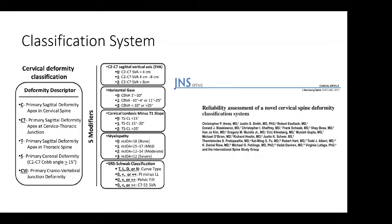In terms of classifications for cervical deformity, there's been increased interest in developing a reproducible classification system. This is an ISSG classification scheme developed in 2015 through a Delphi protocol. There are basic classifications for the descriptor of the deformity, and then five different modifiers based on the SVA, the horizontal gaze, the T1 slope minus cervical lordosis, the patient's neurologic compromise in terms of myelopathy, and their Schwab classification for thoracolumbar deformity.